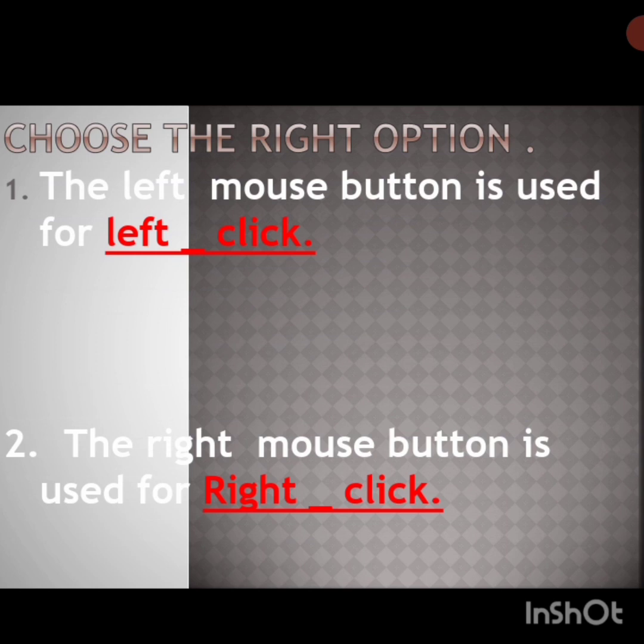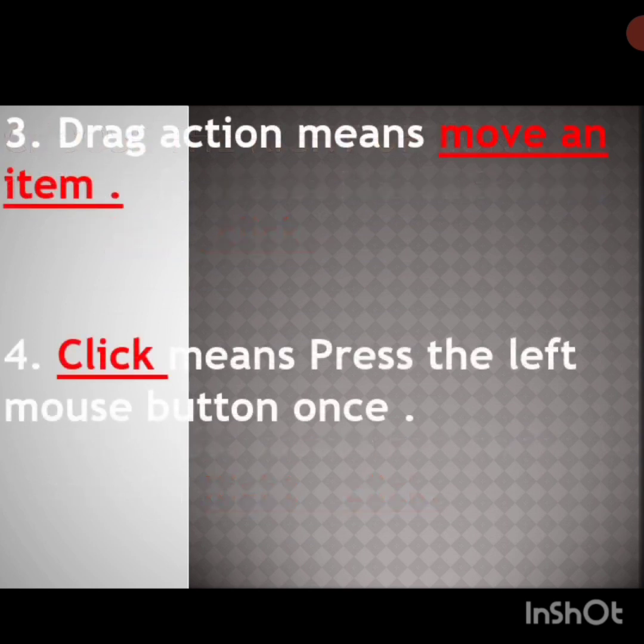Left click. The left mouse button is used for left click. The right mouse button is used for — click. The right mouse button is used for right click. R-I-G-H-T, right. C-L-I-C-K, click. Right click. Next, third one: drag action means — drag action means move an item.